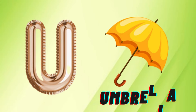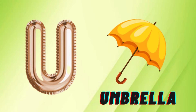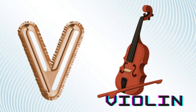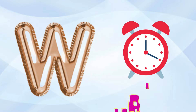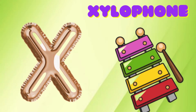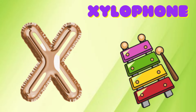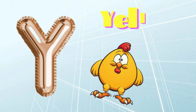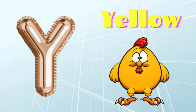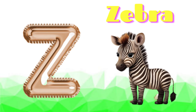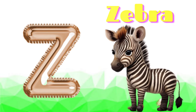U is for Umbrella, U-U-Umbrella. V is for Violin, V-V-Violin. W is for Watch, W-W-Watch. X is for Xylophone, X-X-Xylophone. Y is for Yellow, Y-Y-Yellow. Z is for Zebra, Z-Z-Zebra.